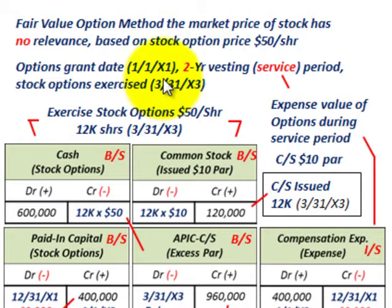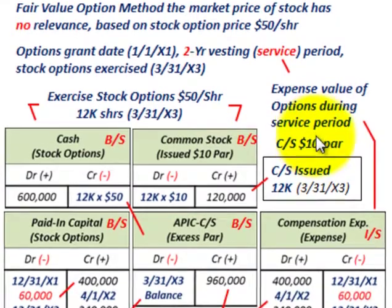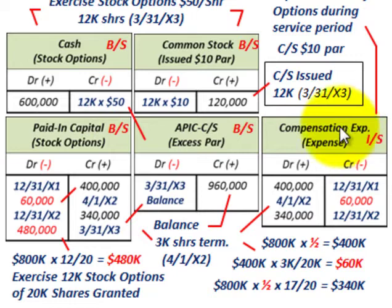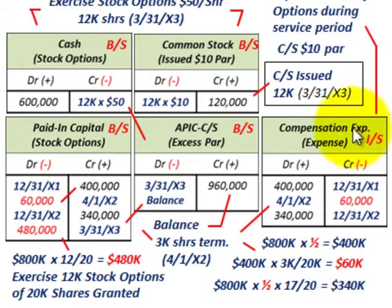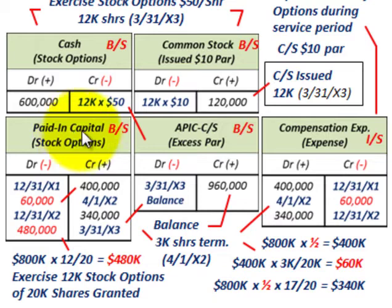With the vesting or service period, the expense or value of the options has to be expensed out over that period. We set up a compensation expense account on our income statement based on what the company estimated the stock options to be worth — essentially what they'd be paying to the employee. They record that as compensation expense on the income statement, spread evenly over those two-year vesting periods. The associated balance sheet account is paid-in capital for stock options.